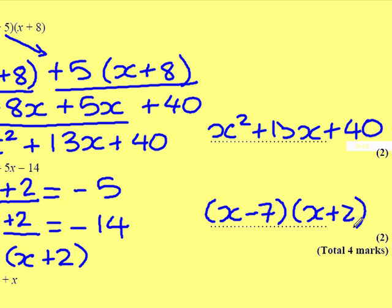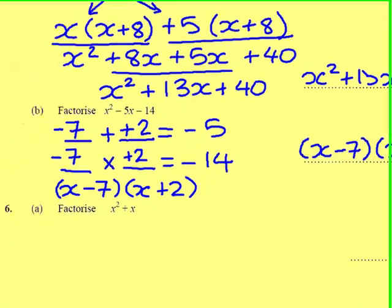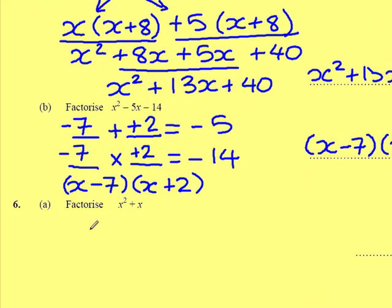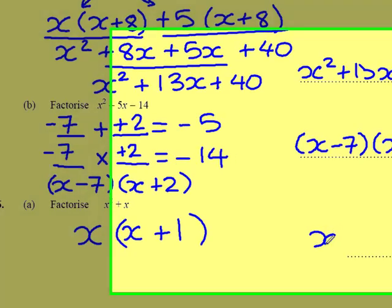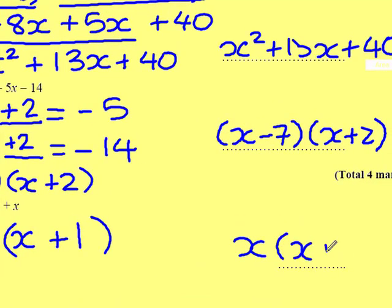Factorise x squared plus x. This is slightly different — although it looks like a quadratic, it actually isn't. So I can only pull out a letter, which is x. The only way I'm going to get x squared is if I multiply x by x. And the way I'm going to get an x by itself is if I multiply it by 1. So, in factorised form, it's x times x plus 1.